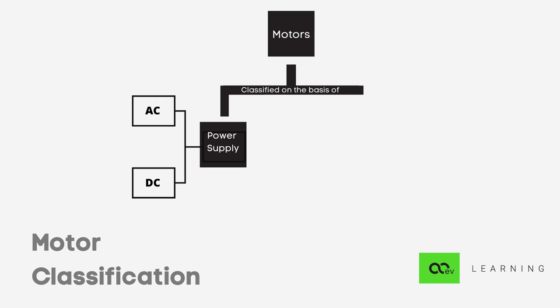There is also something called a universal motor that runs on AC as well as DC, but that is a different topic altogether. DC motors are classified further as wire wound and permanent magnet DCs.